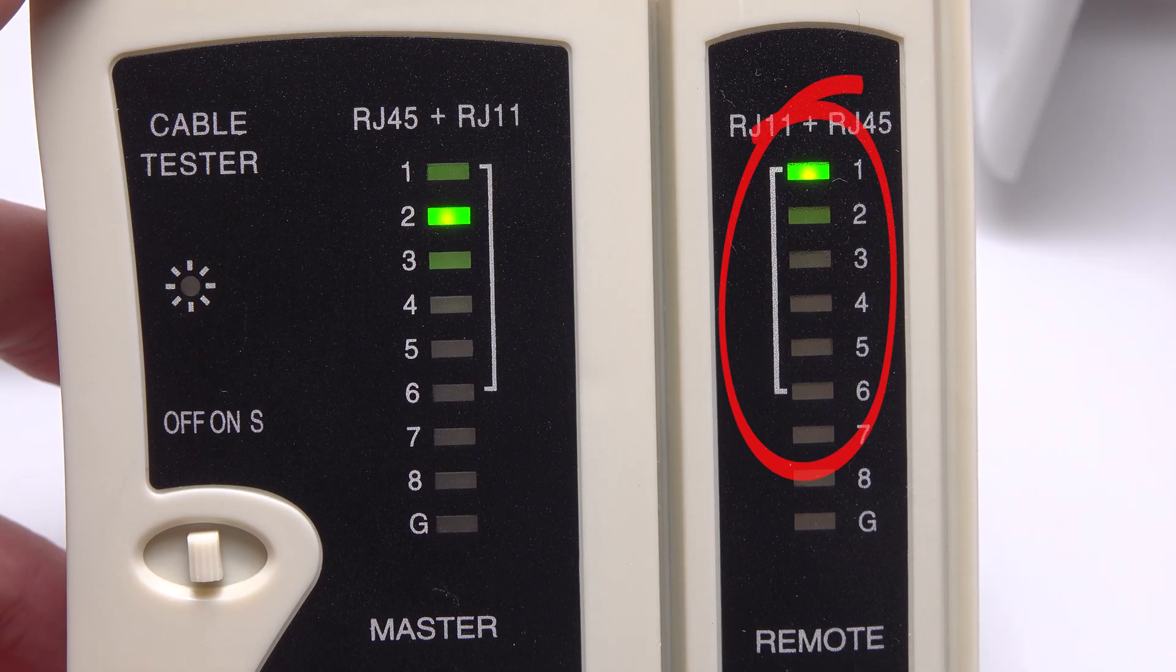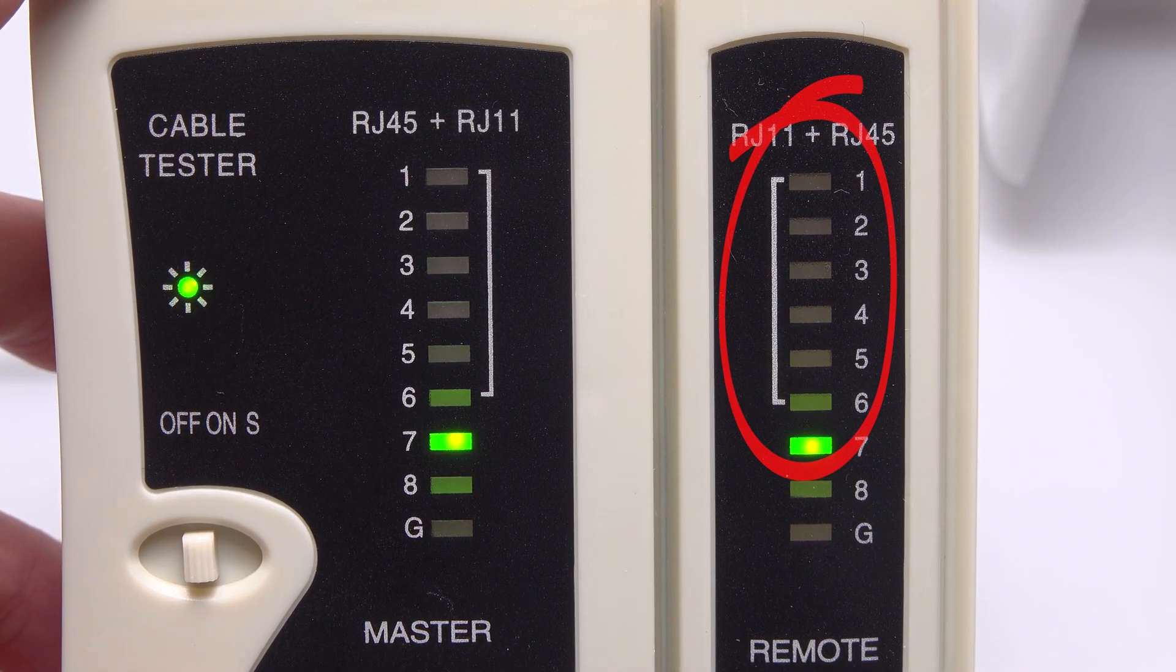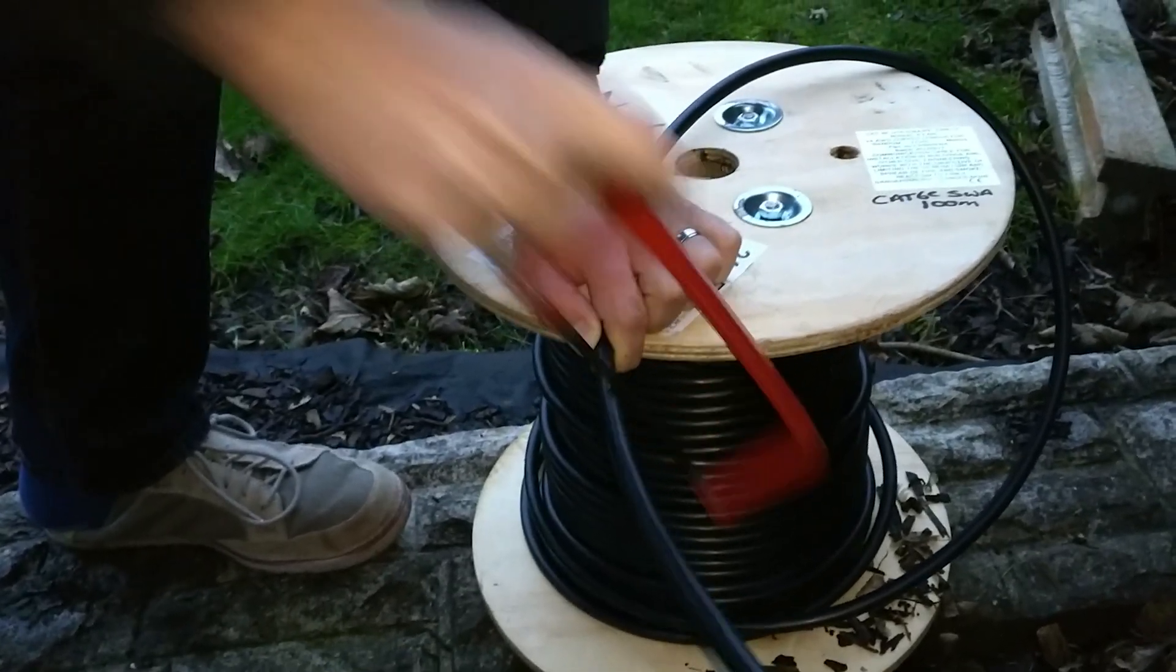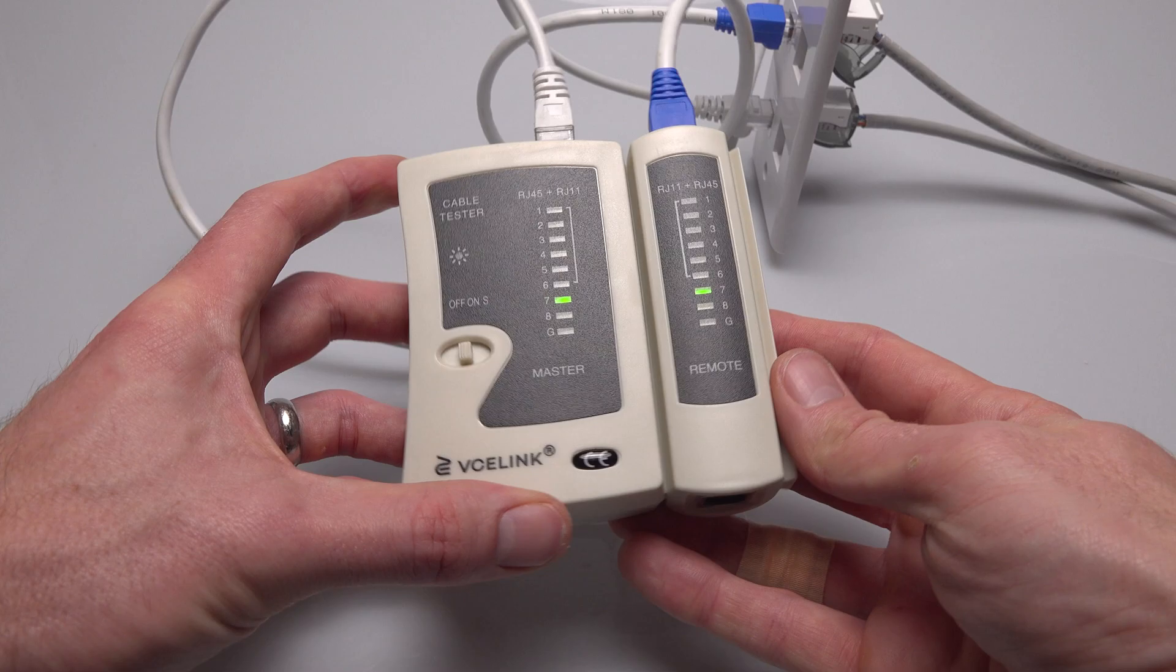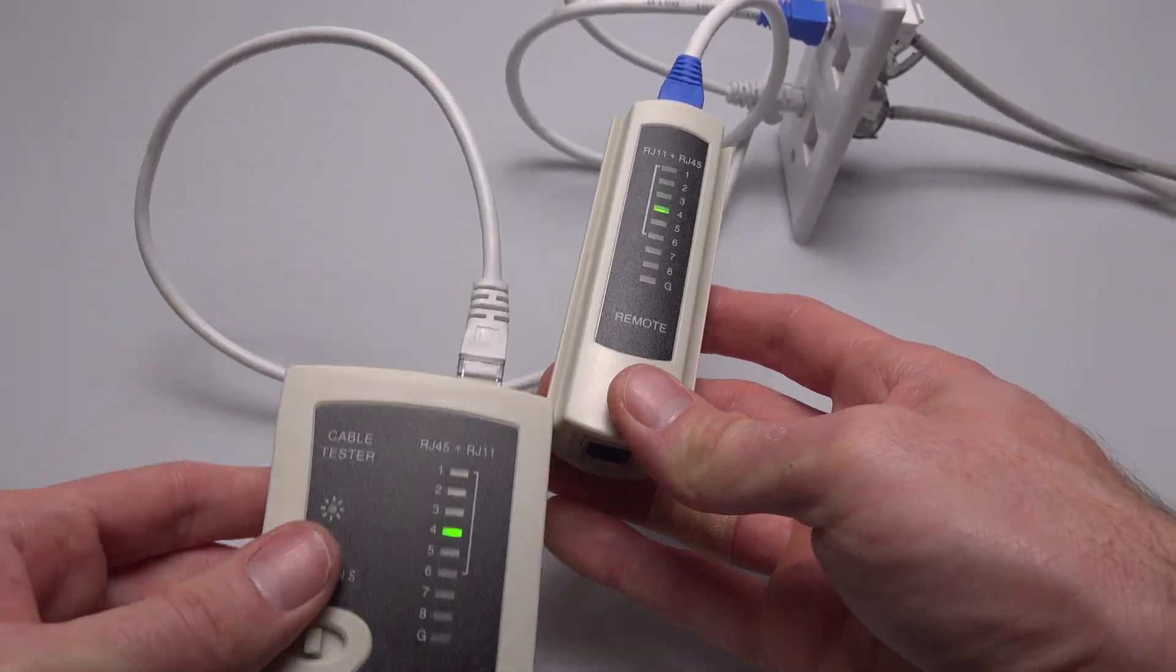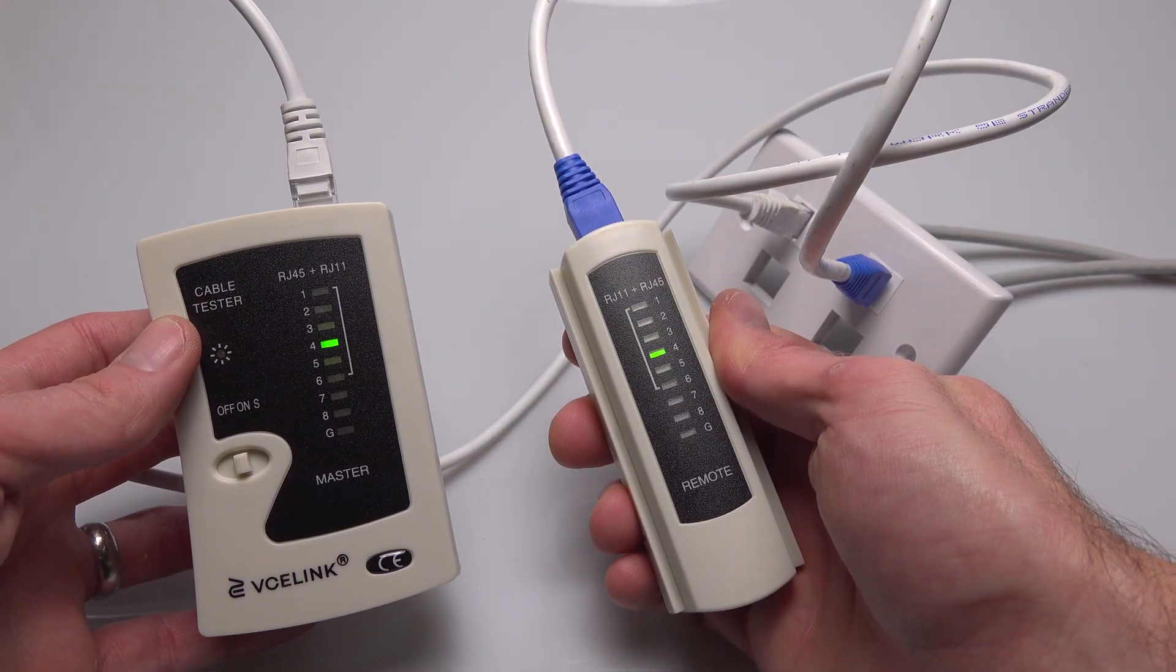If you get a sequence like this then you know you've made a mistake somewhere. If it's a long cable run and both Cat5e and Cat6 cable are good for 100 meters then you can of course separate the master and remote parts of the cable tester and put one at each end of the cable run to test it.